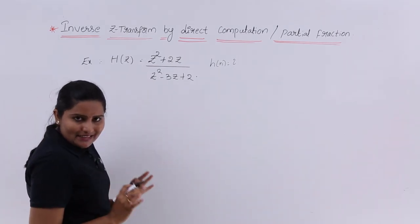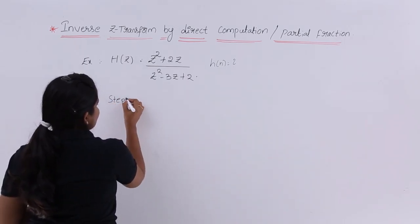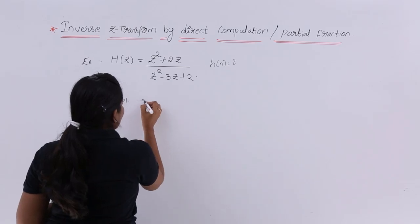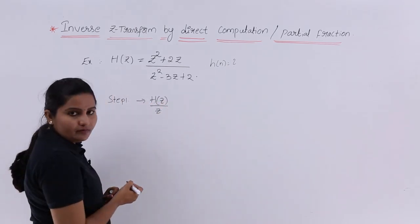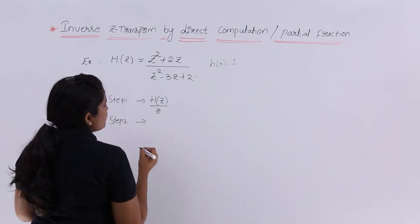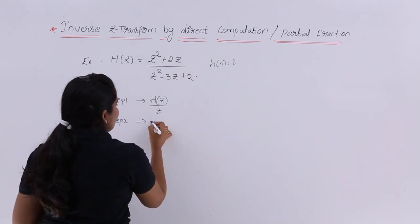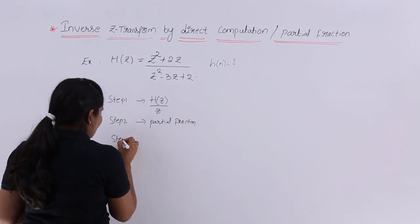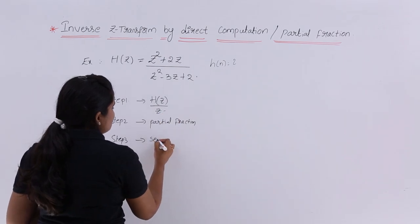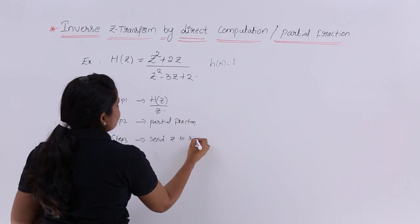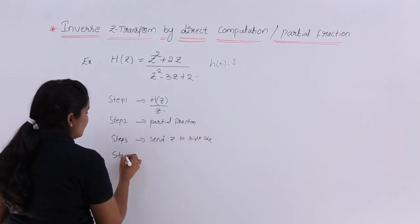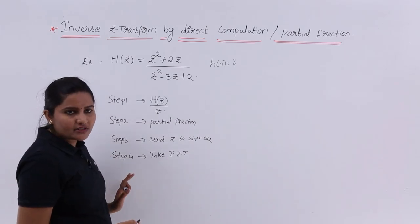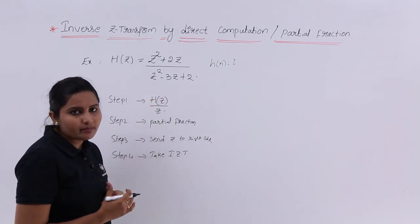In this method, the steps are: Step 1 — take one z to this side, forming H(z)/z. Step 2 — solve this equation using partial fractions. Step 3 — send z back to the right side. Step 4 — take the inverse Z-transform. These are the four steps we need to follow when calculating the inverse Z-transform by the partial fraction method.